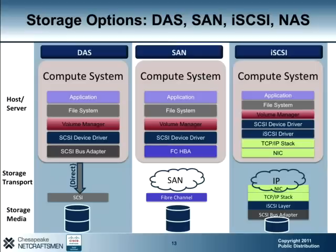As with the DAS and SAN approach, the volume manager interfaces with a SCSI device driver. What is unique with iSCSI is that an iSCSI driver is introduced to manage I/O exchange between the SCSI device driver and the TCP/IP stack. Another storage solution is network attached storage, or NAS. Like iSCSI, the NAS storage model uses your IP network to send files to a storage server. The difference is that NAS relies on application layer protocols such as NFS or SMB, meaning the OS or application is aware that the storage location is remote. When Cisco launched the UC on UCS solution, they only supported Fiber Channel SAN storage, but recently these restrictions have been lifted.